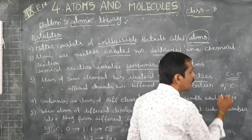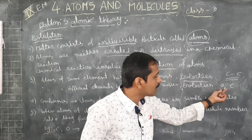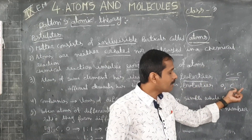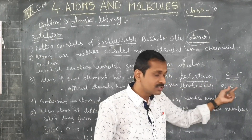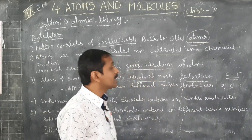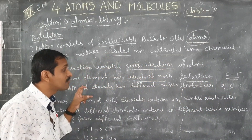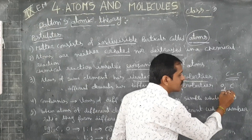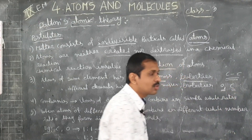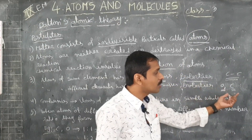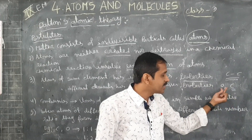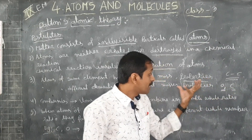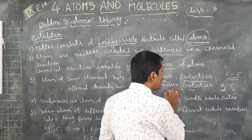Let us take these two atoms — oxygen and carbon. The oxygen atom belongs to one element and the carbon atom belongs to another element. These two different atoms of different elements have different masses. Oxygen and carbon are different — oxygen is a gas, carbon is a solid. So their properties and masses are different.